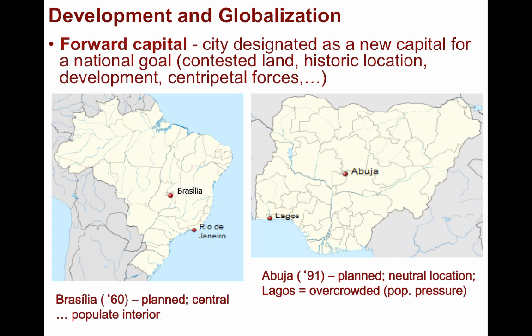Another example is Nigeria, whose capital used to be what is still their largest city, Lagos, located in the largely Christian area in the south. Abuja, a new city planned from scratch, was finally constructed in 1991, located in a more central and neutral place. Similar to Brasilia, it was designated to relieve population pressure and help develop more of the interior. And also similar to Brazil, Nigeria has had minor success in achieving these goals.